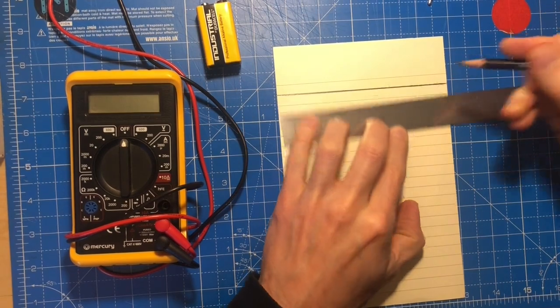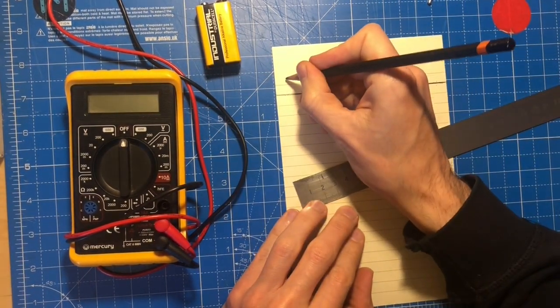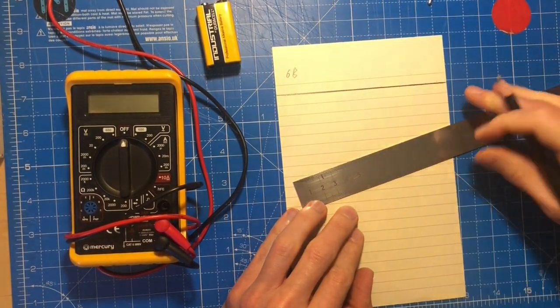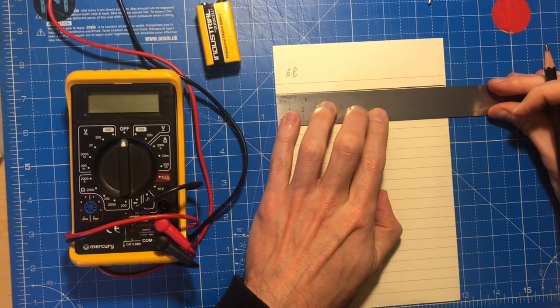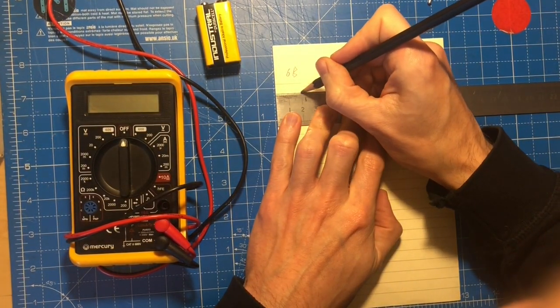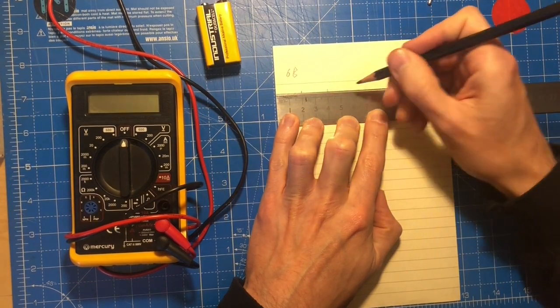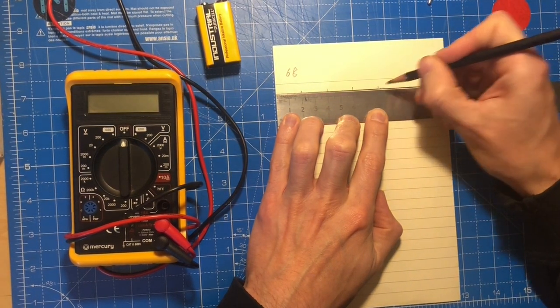This is a 6B. I'm just going to record that just in case that's important. And I'm also going to put some marks along this at maybe two centimetre intervals just so I can keep track of where I am.